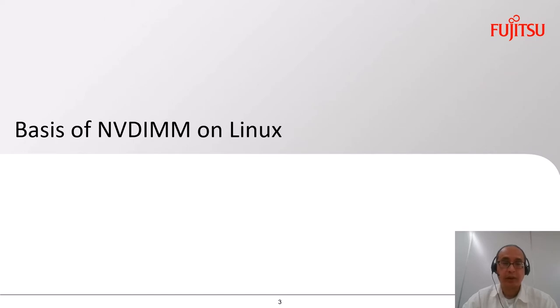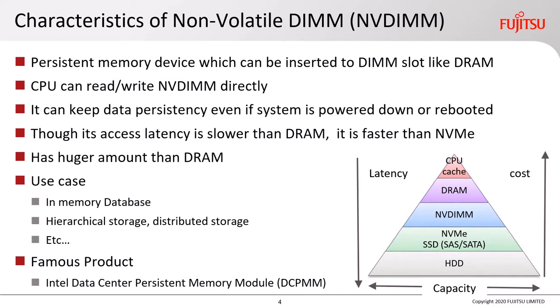Let's start with the basics of NVDIMM on Linux. Here are the characteristics of non-volatile DIMM. It is a persistent memory device which can be inserted into a DIMM slot like DRAM. The CPU can read or write NVDIMM directly, but it can keep data persistency even if the system is powered down or rebooted. Though its access latency is slower than DRAM, it is faster than SSD. It has a larger capacity than DRAM, and its use cases include in-memory database, hierarchical storage, distributed storage, etc.